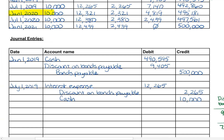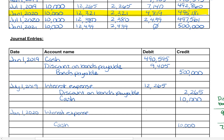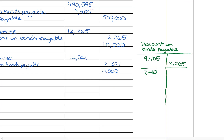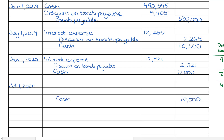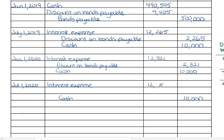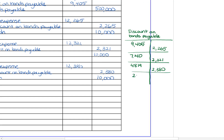We repeat this process for each line in the table — each line represents one journal entry. Bring a ruler or highlighter to your exam so you can focus on one line at a time. On January 1st, 2020: credit cash $10,000, debit interest expense $12,321, and credit discount on bonds payable for $2,321. On July 1st, 2020: debit interest expense $12,380, credit cash $10,000, and credit discount on bonds payable for the difference, again reducing that balance.